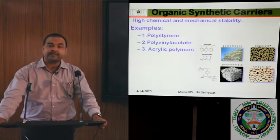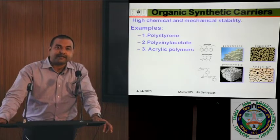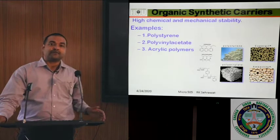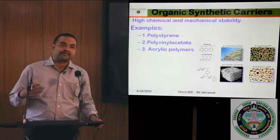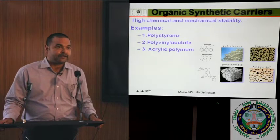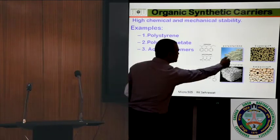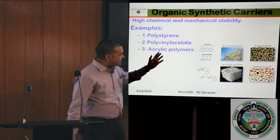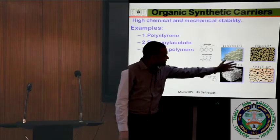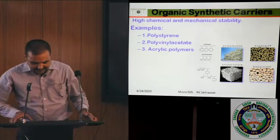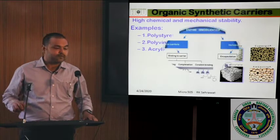The next is organic synthetic carriers. These have high chemical and mechanical stability — their performance over other carriers is greater, but the constraint is they are very expensive. Examples are polystyrene, polyvinyl acetate, acrylic polymers like polyacrylate, amylite, eupergite — a class of different organic synthetic materials which can be used for enzyme immobilization.